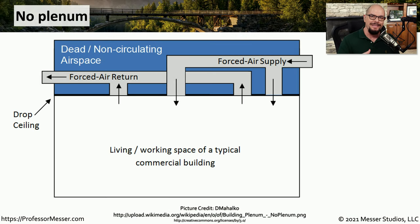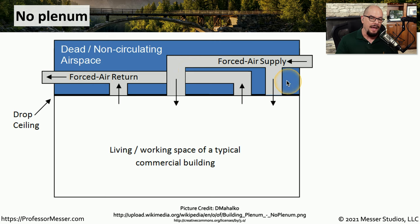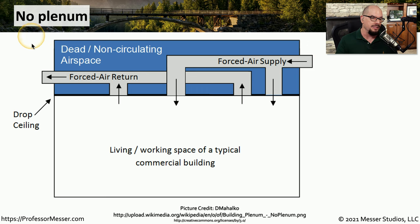A lot of the cables we use will go into the ceiling and then make their way to a wiring closet or a data center. The type of cable we put into the ceiling will differ depending on what else might be in that ceiling area. It's important to know whether the ceiling has a plenum or does not. In a non-plenum ceiling, the return air travels through dedicated air ducts, so the network cables in that airspace above the false ceiling are not mixing with the oxygen available in the forced air supply or return.